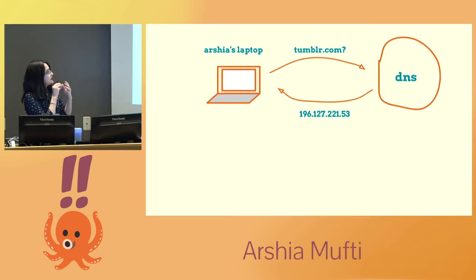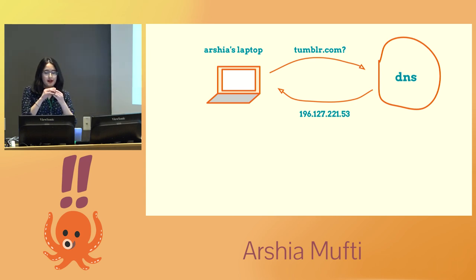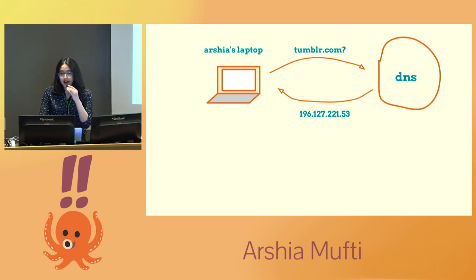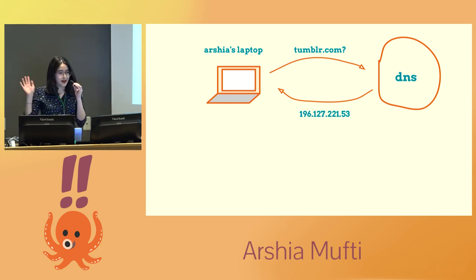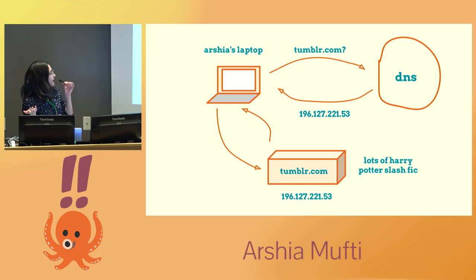So this is how DNS works. My laptop is like, hey DNS, I need the address of tumblr.com. And DNS is like, here is a long 32-bit number — possibly even bigger, not a 32-bit number if we move over to IPv6 quickly enough. But this is the address of tumblr.com. And the slash fic loading begins.